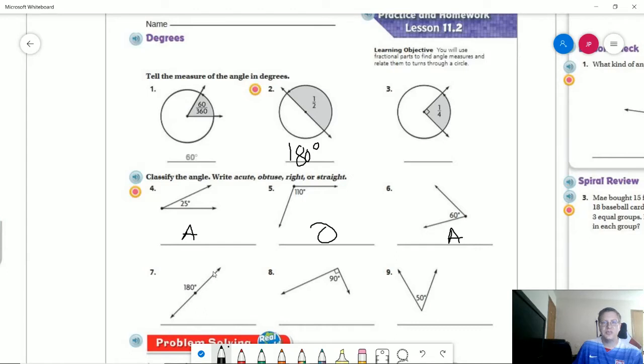Number seven we didn't ask you to do, but that one would be a straight angle. Number eight we did ask you to do. That would be a right angle because we have that little indicator there. And number nine, again smaller, so that would be an acute angle.